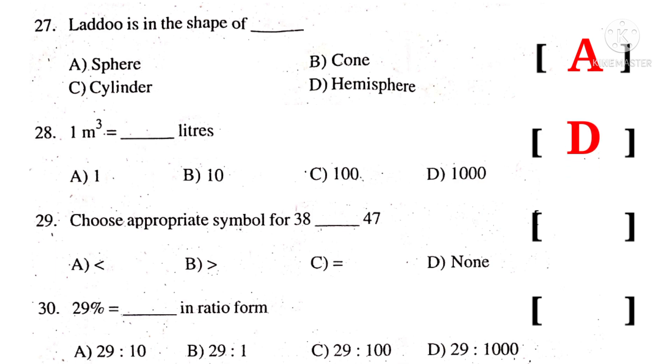29. Choose appropriate symbol for 38 dash 47. Observe that 38 and 47 on the number line: 38 is on the left side of 47. So we use less than symbol. So the correct choice is A.